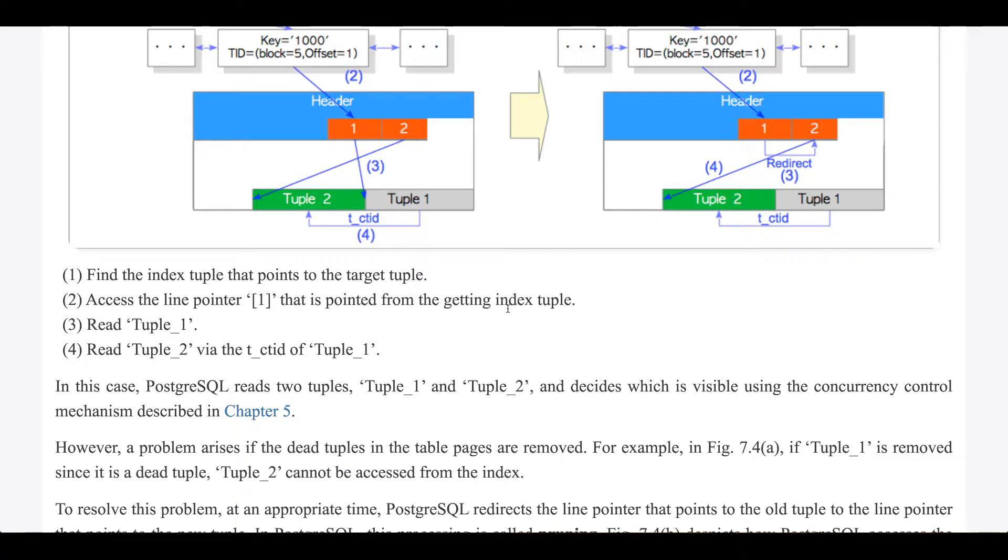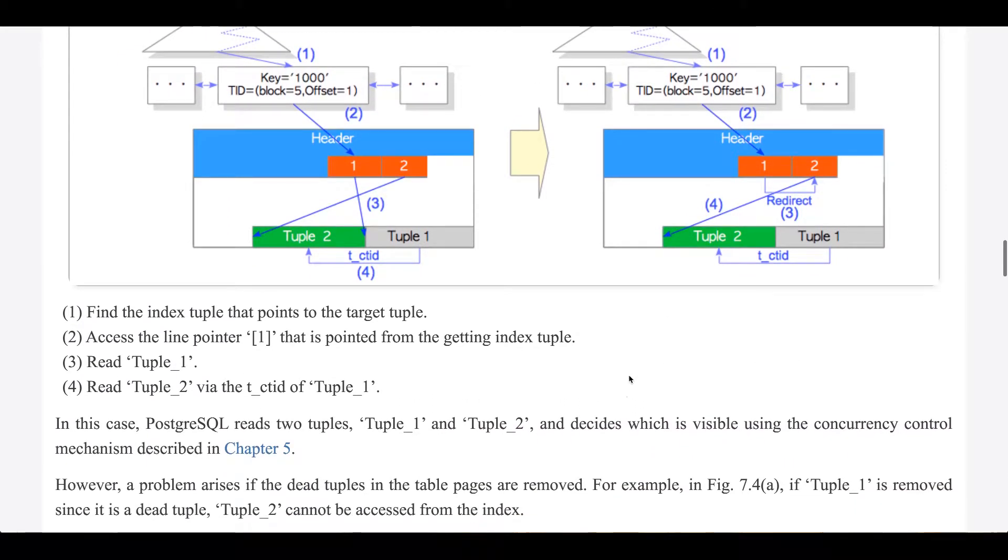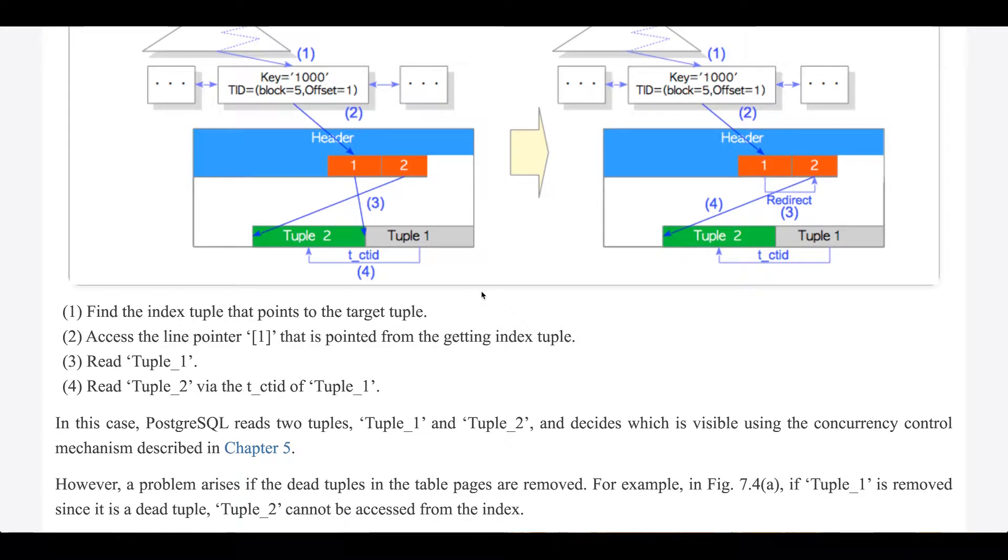However, a problem arises if the dead tuples in the table pages are removed. For example, in figure 7.4a, if tuple 1 is removed since it's a dead tuple, tuple 2 cannot be accessed from the index.